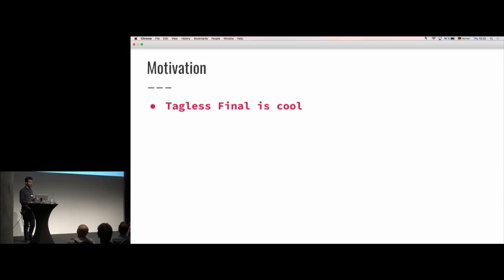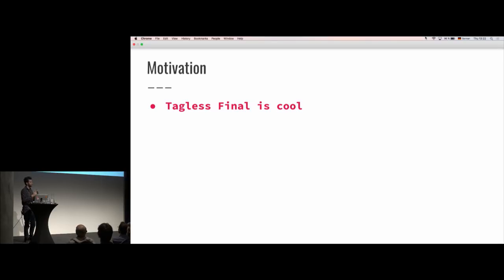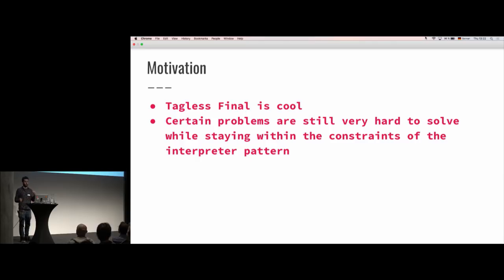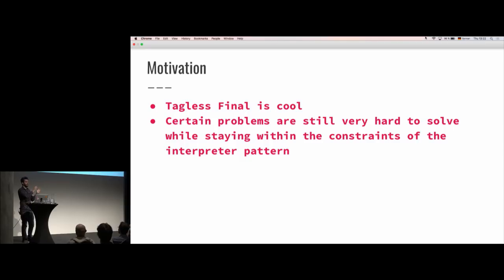Let's start with the motivation for this talk. I think tagless final is a really, really cool way to structure your programs because it basically allows you to separate the program description — or the description of a problem — from its implementation or its details. Tagless final is super cool. Unfortunately, I don't have the time to go into a lot of detail on how it really works. I'm going to assume that most of you kind of know how it works. There are a few certain problems that are still hard to solve while staying within the constraints of this interpreter pattern.